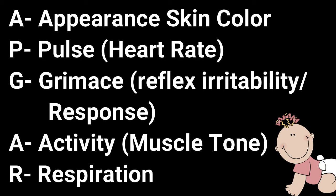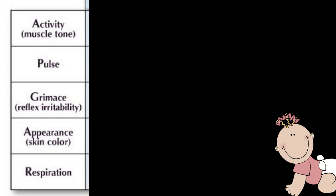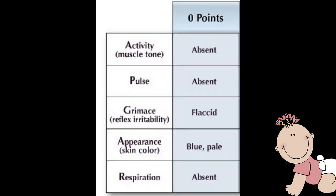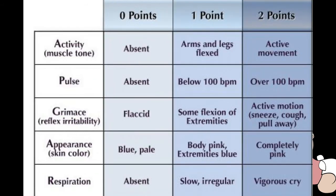We are going to study how to use APGAR scoring. There are different points corresponding to activity, pulse, grimace, appearance, and respiration. 0 for absent activity, absent pulse, flaccid grimace, blue or pale appearance, and absent respiration. 1 point for arms and legs flexed activity, below 100 beats per minute pulse, some flexion of extremities for grimace, body pink extremities blue for appearance, and slow or irregular respiration. 2 points for active movement, over 100 beats per minute, active motion, completely pink for appearance, and vigorous cry for respiration. This is also the perfect score for APGAR scoring.